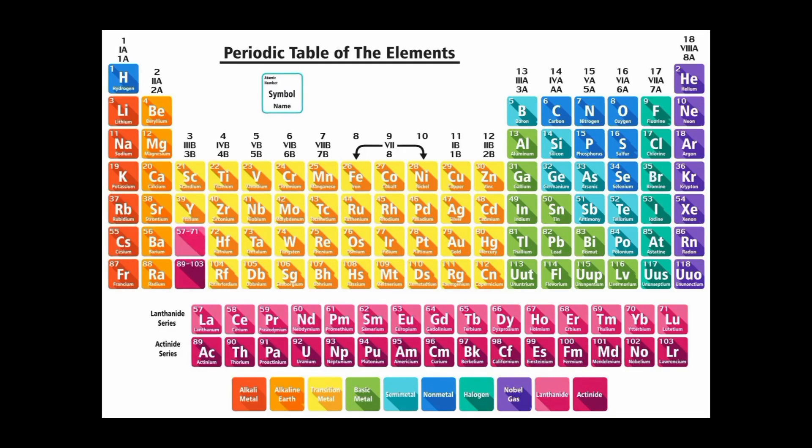The periodic table of elements is a tabular arrangement of the chemical elements, organized on the basis of their atomic structure, chemical properties, and electron configurations. The table is designed to illustrate recurring, periodic trends in the properties of the elements as a function of their atomic number.